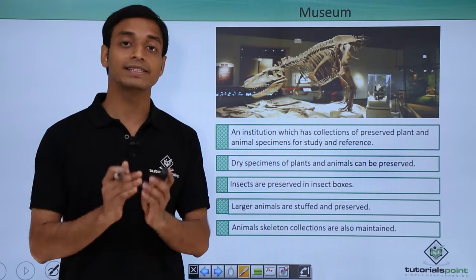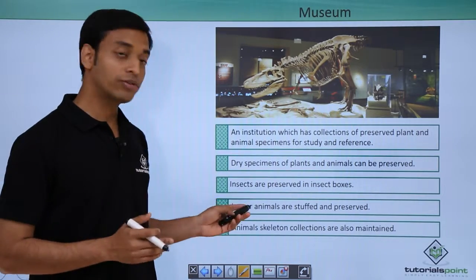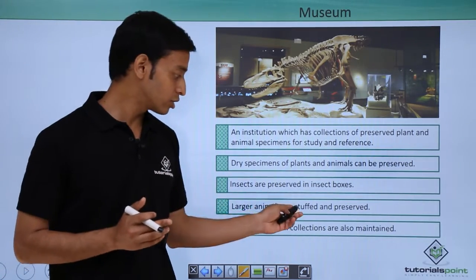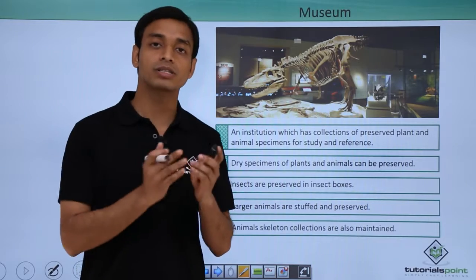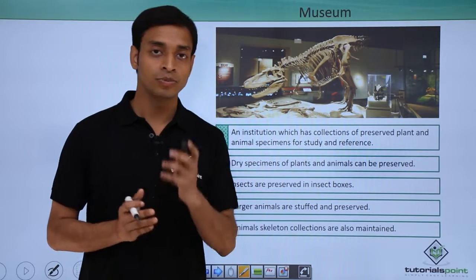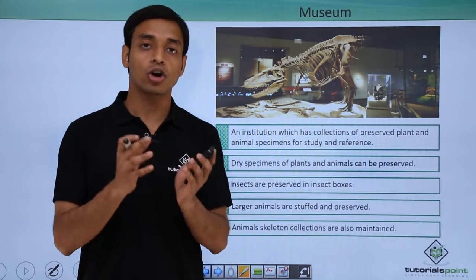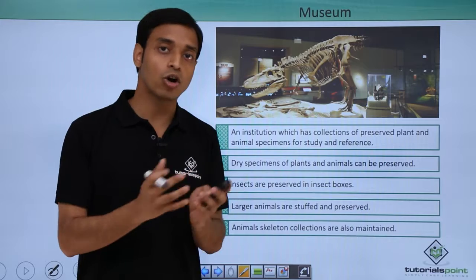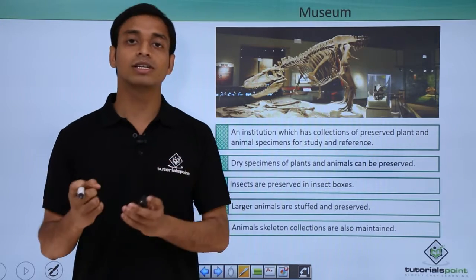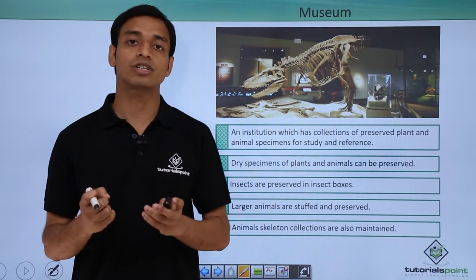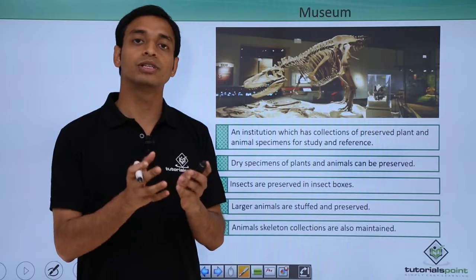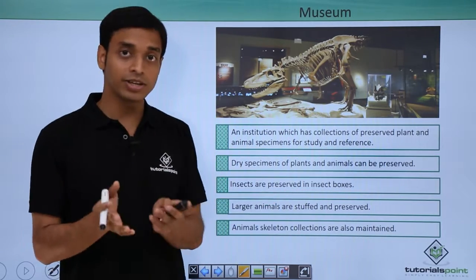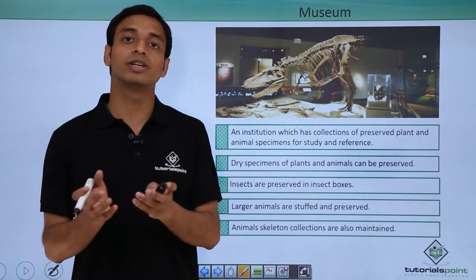In the case of large animals, they are first stuffed and preserved. What do we mean by stuffed and preserved? The important internal organs — organs which may rot and smell — are removed. They are then stuffed with materials which would not rot, and specifically materials which will give good fragrance.